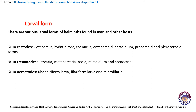The larval forms of trematodes are: cercaria, metacercaria, redia, miracidium, and sporocyst. The larval forms of nematodes include: rhabditiform larvae, filariform larvae, and microfilaria.